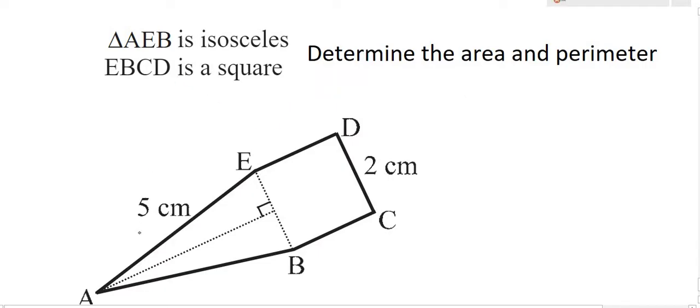They tell us that triangle AEB is an isosceles triangle. What that means is that these two lengths over here would be the same. So we could say that AB is equal to 5 centimeters. Why? Because it's given. They told us it's an isosceles triangle. So this will be 5 centimeters.